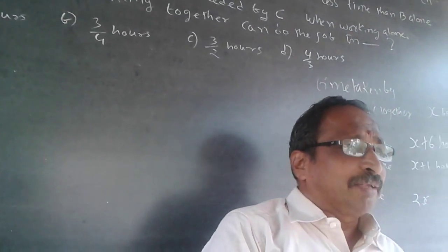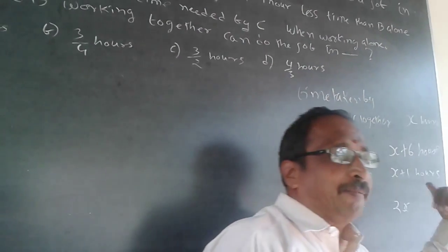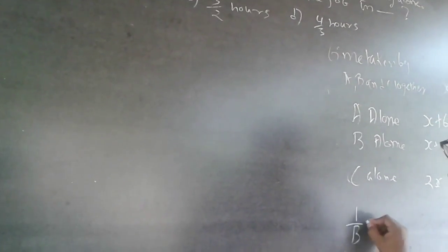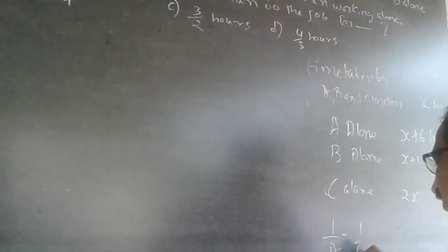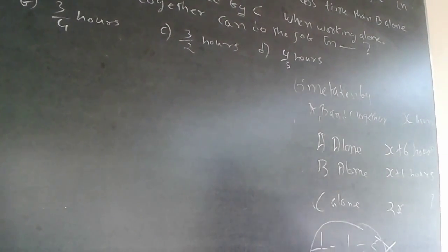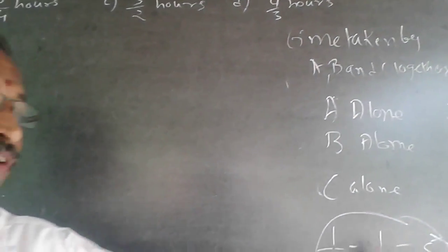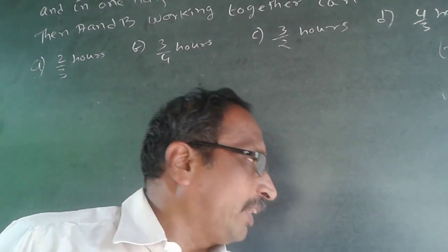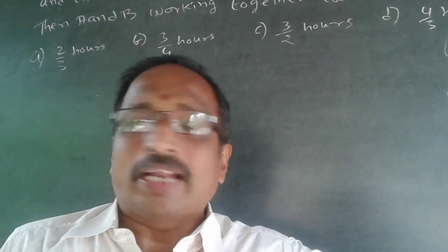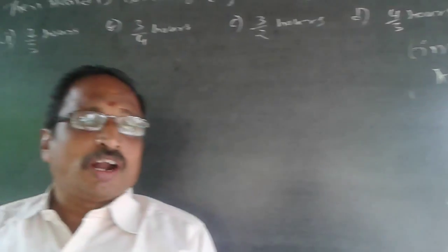Some of you might make the mistake of doing 1/A minus 1/B equals five, because the difference in time taken is five hours. Don't do this — this is absolutely wrong. You cannot compare work done with time taken. 1/A minus 1/B is not equal to five, because this is the work done per hour, not time taken.